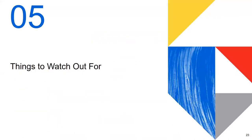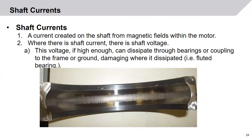Things to watch out for. First is shaft currents. A shaft current is a current created on the shaft by the magnetic fields within the motor. Where there is current, there is voltage. If this voltage gets high enough, it can dissipate through bearings, or through the coupling through the frame to ground, damaging whatever it dissipated through — for example, fluted bearings. These white match marks are where the balls of the bearing arc through the bearing race and go to ground. Once this starts, vibration will pick up and the bearing will fail if not caught quickly enough.